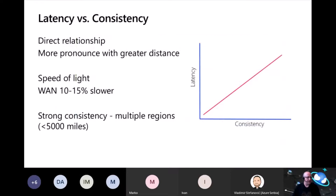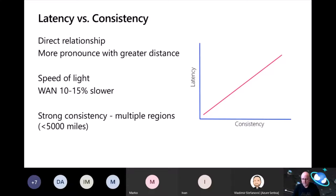As I showed on the PACLC slide, you have to make a trade-off between latency and consistency. In distributed systems where replicas are separated by long distances, the speed of light can become a problem. This trade-off is a direct relationship and gets more pronounced with greater distance between replicas. Packets can't move faster than the speed of light — in fact they move quite a bit slower, because they have to go through network switches, routers, hubs, and other infrastructure, versus light which travels through space unimpeded.